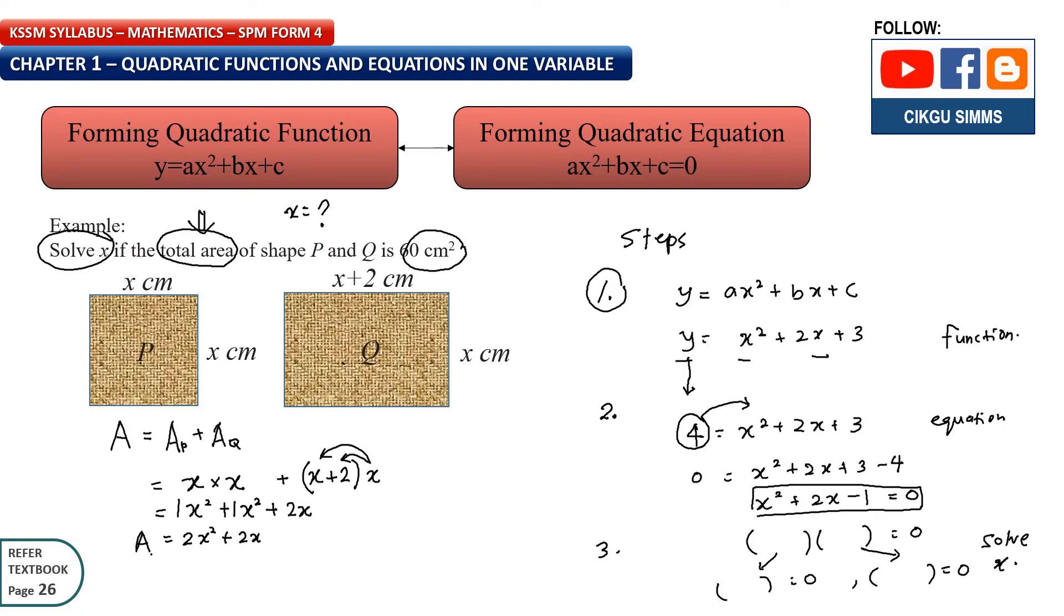A equal to 2x squared plus 2x. And then you need to go to the second step to form the equation. So now we use this one. Now, 60 means the area is 60, right? So we can substitute this area to 60. So 60 equal to 2x squared plus 2x. And then we can move 60 to the other side. So I continue here.